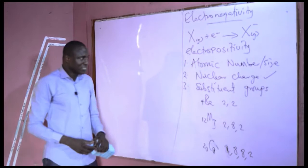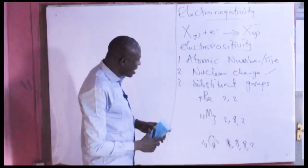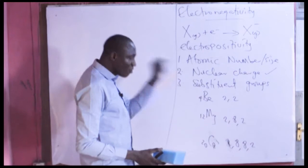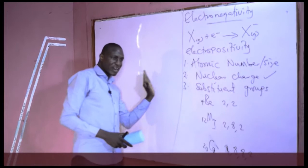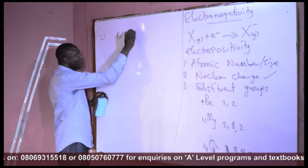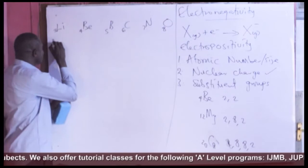Effective nuclear charge is the overall nuclear force felt by the valence electrons relative to the positively charged nucleus. Nuclear charge refers to the total positive charge in the nucleus. As we go from left to right across a period, nuclear charge increases. For example, in Period 2 — lithium, beryllium, boron, carbon, nitrogen, and oxygen — the atomic numbers are 3, 4, 5, 6, 7, and 8, with electronic configurations 2,1; 2,2; 2,3; 2,4; 2,5; and 2,6 respectively.